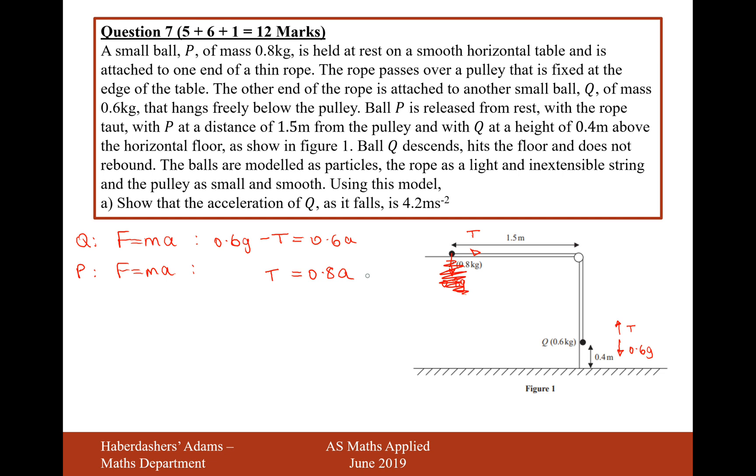So now that we've got these two equations together, let's add these equations together. So it's going to be 0.6g minus T add T, that's going to cancel out, and then add this column will be 1.4a. So now what we'll do is divide by 1.4 onto the other side. 0.6 times 9.8 divided by 1.4, that gives us 4.2 exactly, lovely.